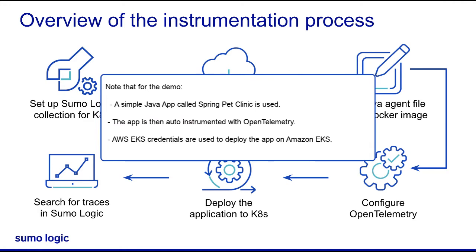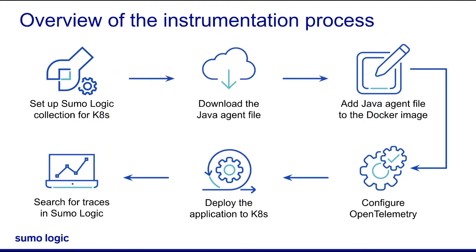For this demo, I'll use a simple Java app called Spring Pet Clinic. I'll auto-instrument the app with OpenTelemetry, connect it to Sumo's hosted collector, and use my AWS credentials to deploy it on Amazon EKS. Further, I'll show the transaction traces of the app in Sumo. I'll now log in to Kubernetes and begin the auto-instrumentation.